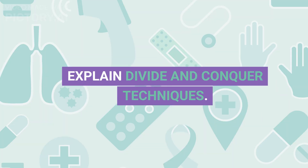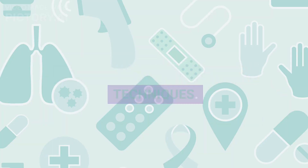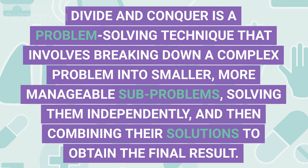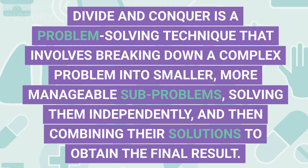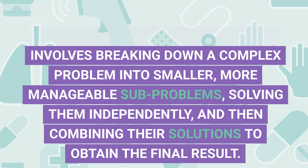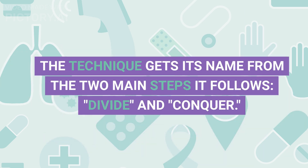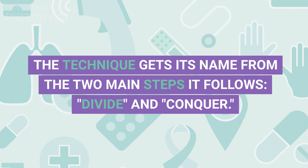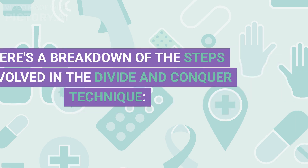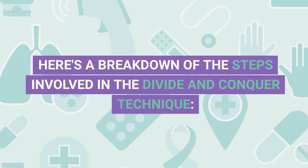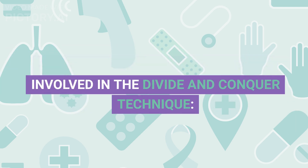Q1. Explain divide and conquer techniques. Divide and conquer is a problem-solving technique that involves breaking down a complex problem into smaller, more manageable sub-problems, solving them independently, and then combining their solutions to obtain the final result. The technique gets its name from the two main steps it follows: divide and conquer.